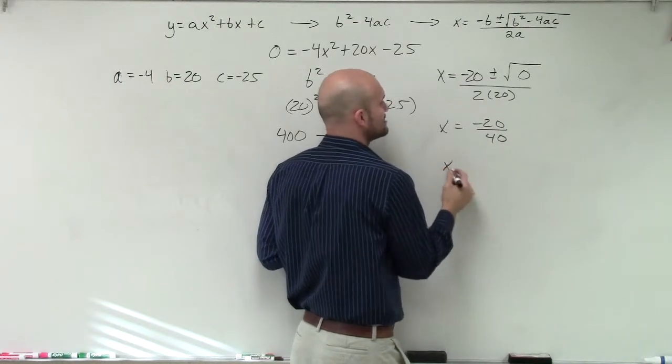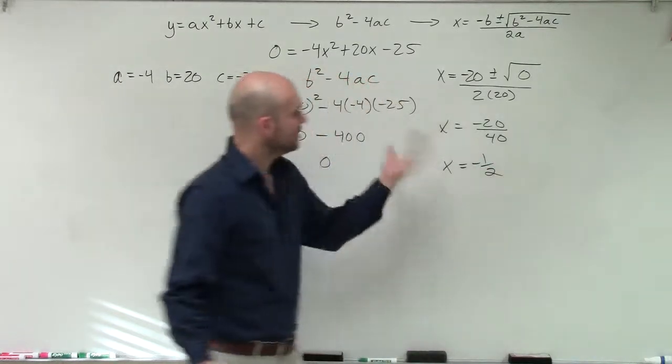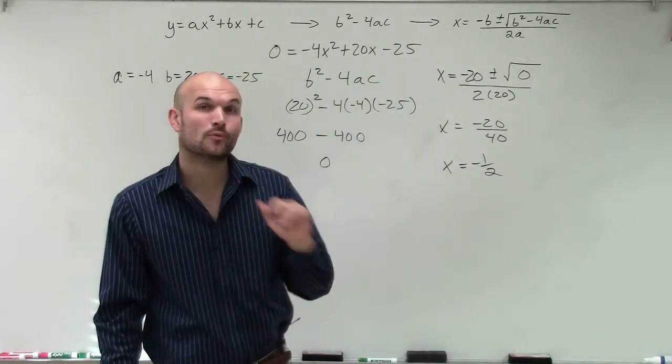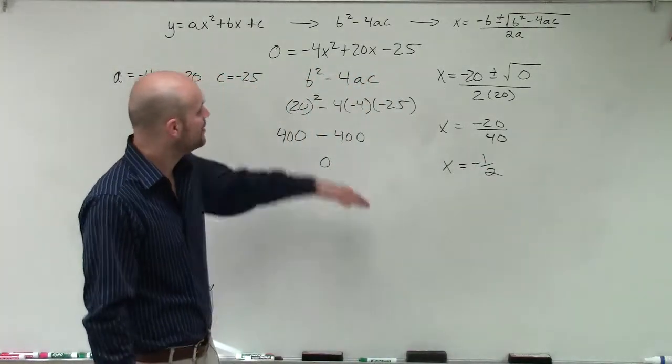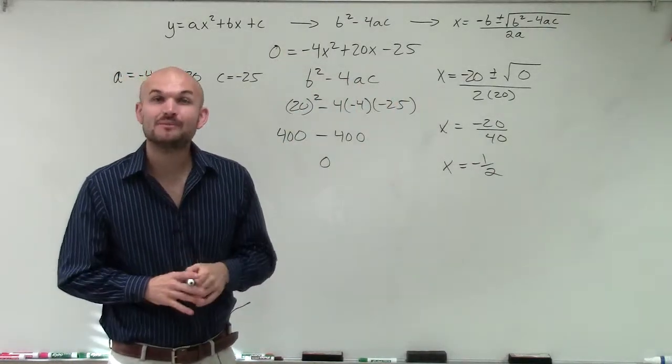Therefore, now I can reduce this down to negative 1 half. And there you go. That's our one real rational zero or solution or x-intercept for this equation. There you go, ladies and gentlemen. Hope to help. Thanks.